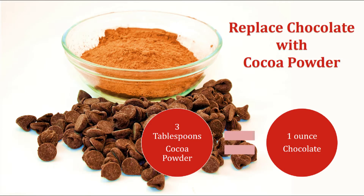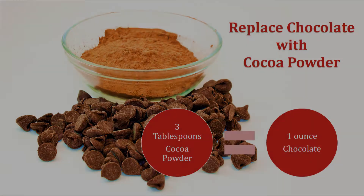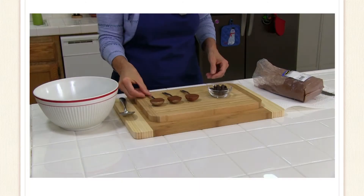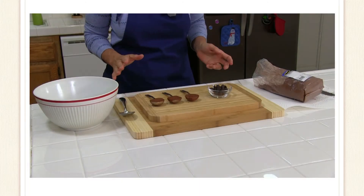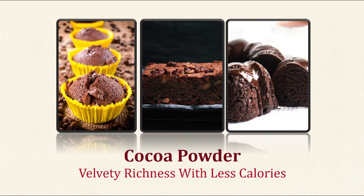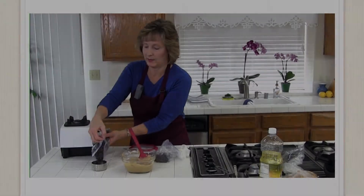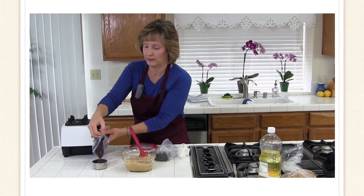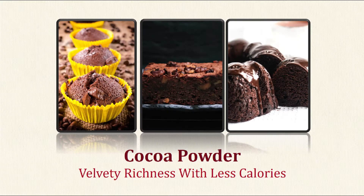To lower the fat you can replace most of the chocolate with cocoa powder. Three tablespoons of cocoa powder is equivalent to about one ounce of chocolate. Then by adding just a small amount of real chocolate to round out the cocoa, the velvety richness of chocolate remains without all the fat calories.